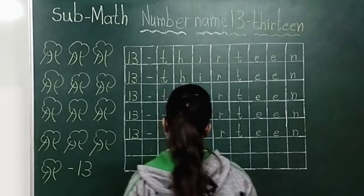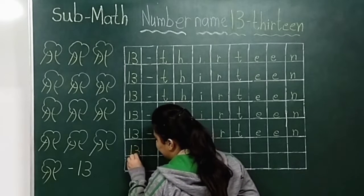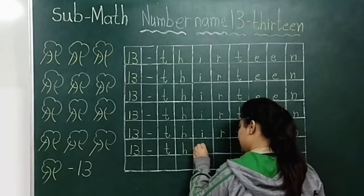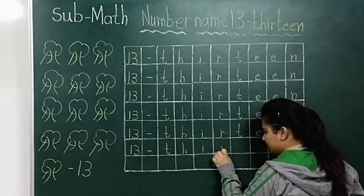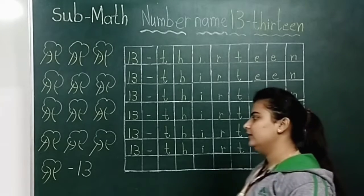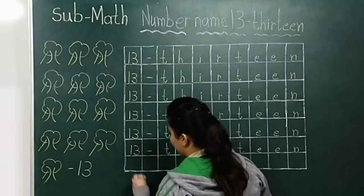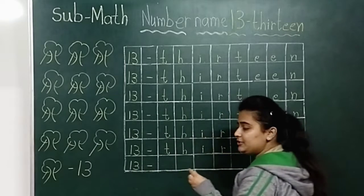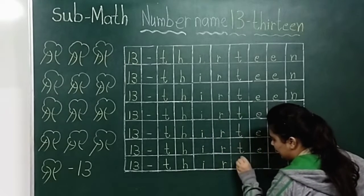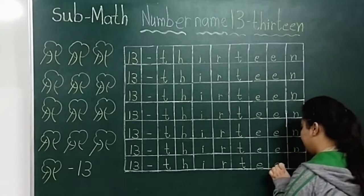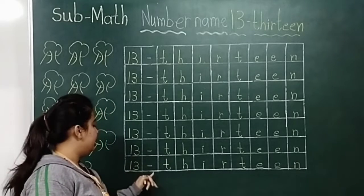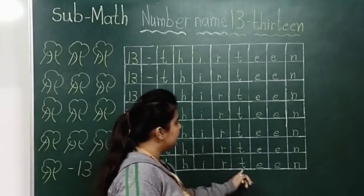Okay everyone, now last time. One, three, 13, dash — T, H, I, R, T, double E, N — thirteen. One, three, 13, dash — T, H, I, R, T, double E, N — thirteen.